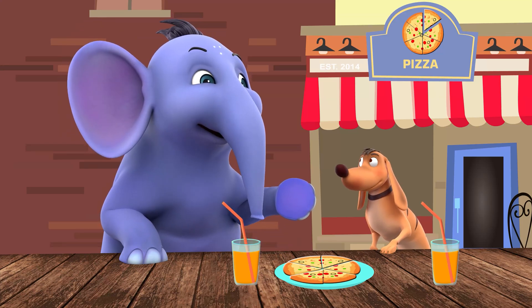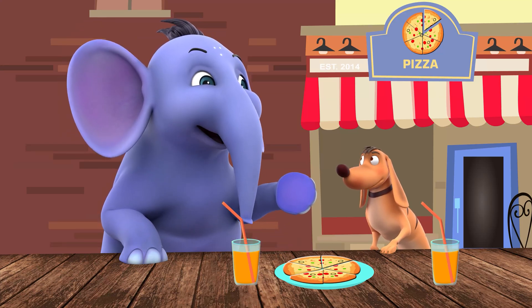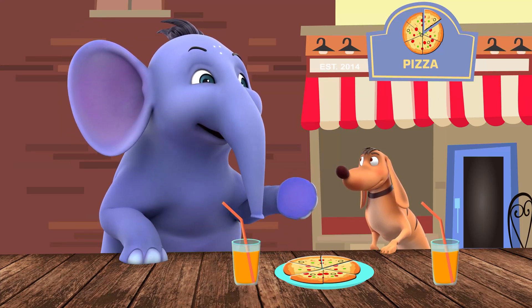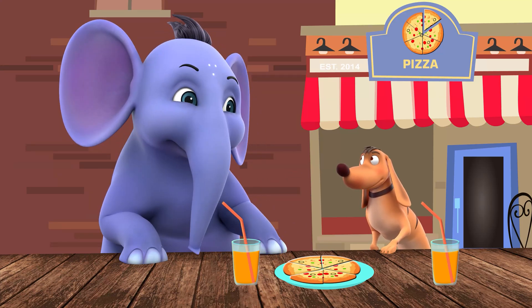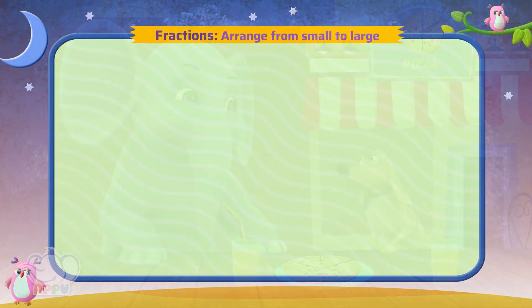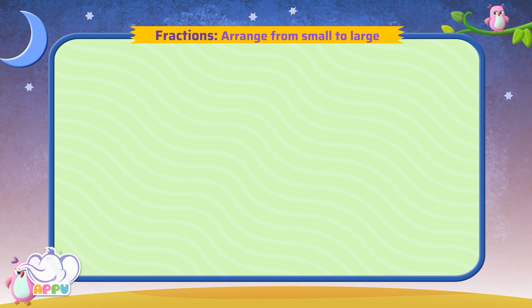Let's arrange some fractions from smallest to largest. How do we do that? I'll teach you. Arrange these fractions from small to large: 2 by 4, 1 by 4, 3 by 4.